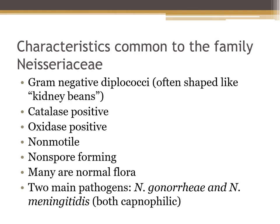There are many characteristics that are common to the family Neisseriaceae. This is the first organisms we've talked about that are actually gram-negative. They're gram-negative diplococci — they are in pairs, and because they're in pairs, we call them diplococci. These diplococci look a little bit different than regular cocci; they're actually kidney bean shaped.